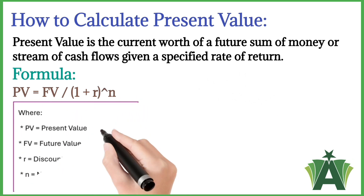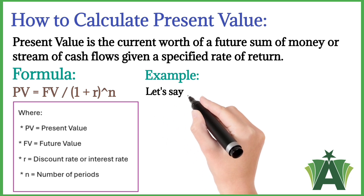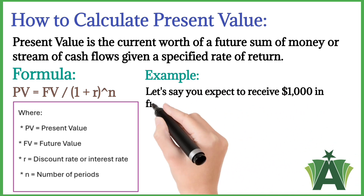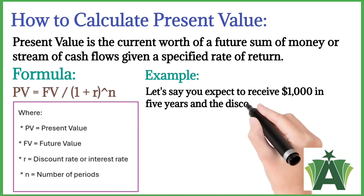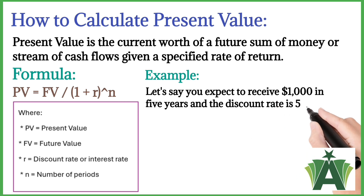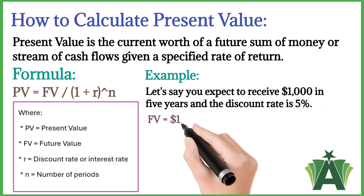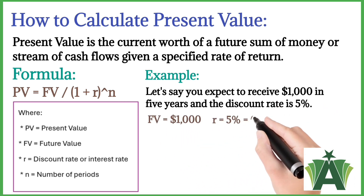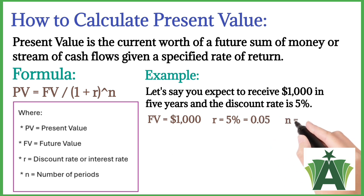Steps to calculate present value. Let's say you expect to receive $1,000 in 5 years and the discount rate is 5%. In this example, the future value is $1,000, the discount rate is 5%, and the number of periods is 5 years.